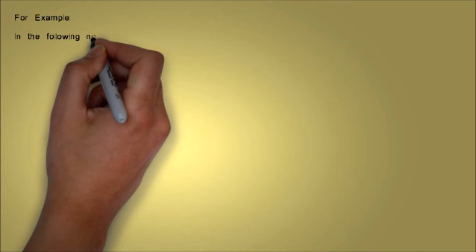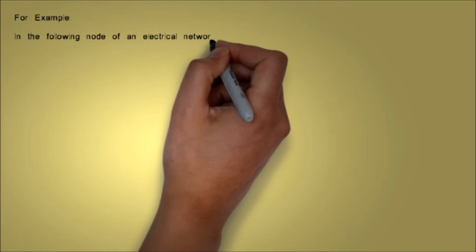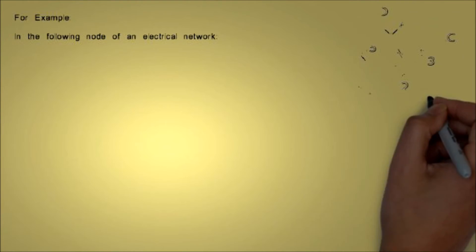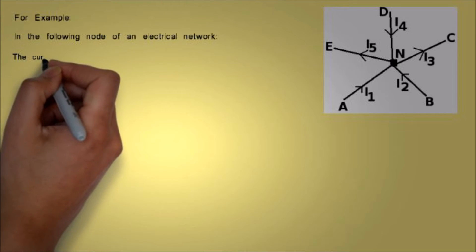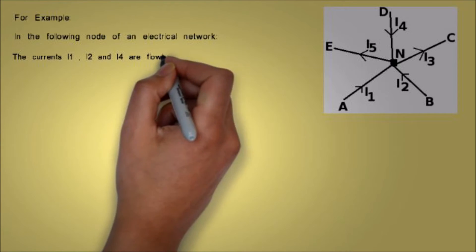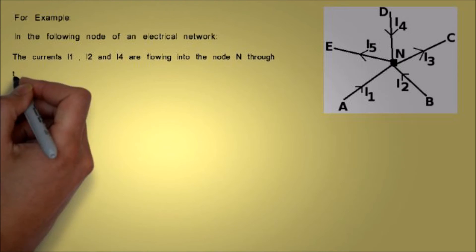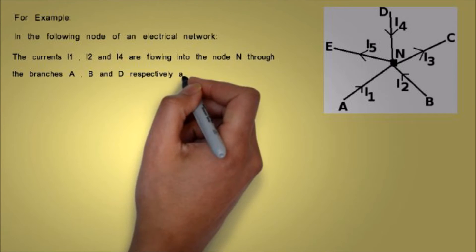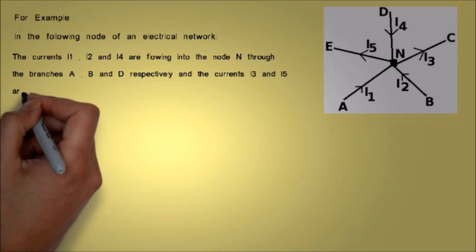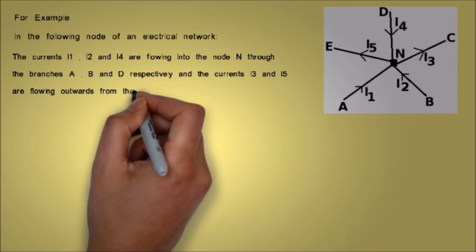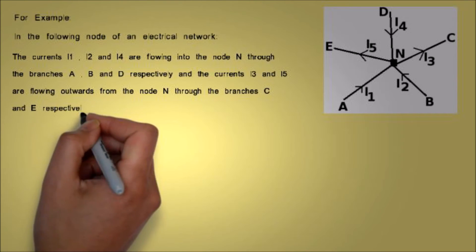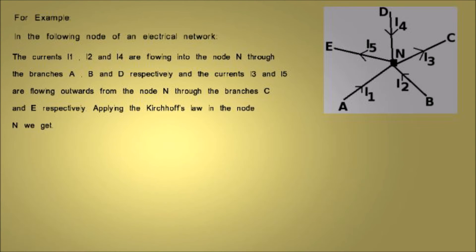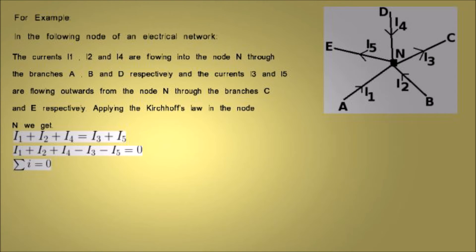For example, in the following node of an electrical network, the currents I1, I2, and I4 are flowing into the node N through branches A, B, and D respectively, and the currents I3 and I5 are flowing out of node N through branches C and E respectively. Applying Kirchhoff's Current Law at node N, we get: I1 + I2 + I4 = I3 + I5. Rearranging the equation, we conclude that the summation of all currents I is equal to zero.